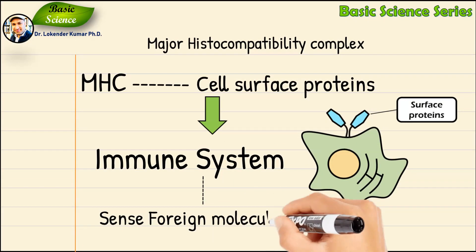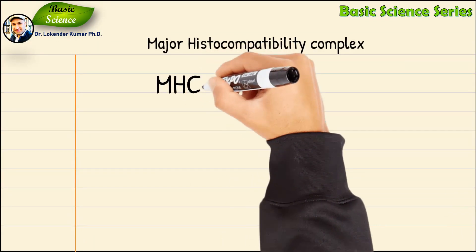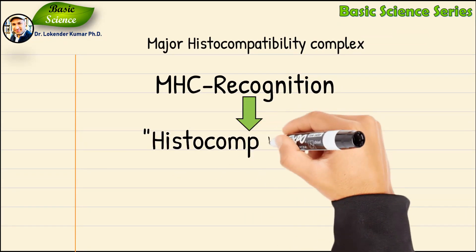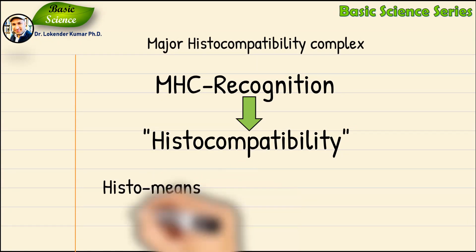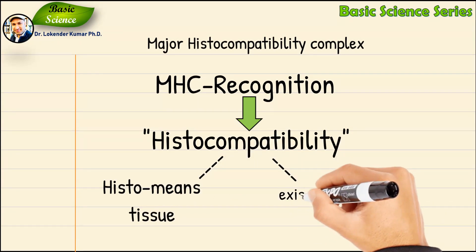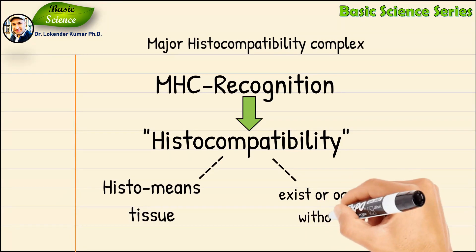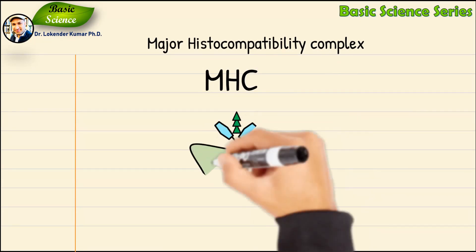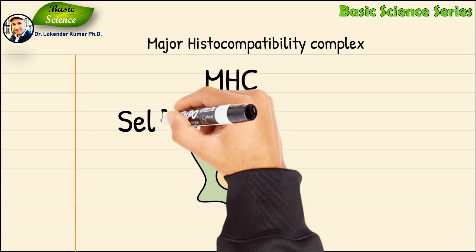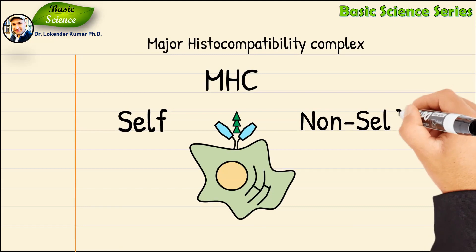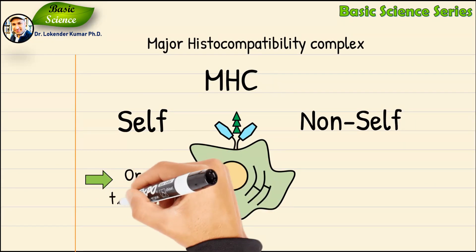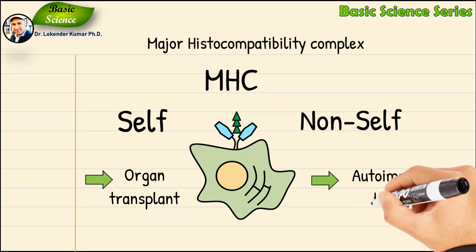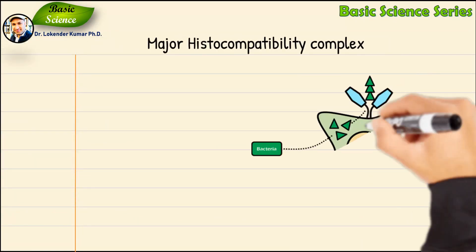MHC encodes cell surface proteins essential for the immune system to recognize foreign molecules. This recognition determines the compatibility of cells towards each other, and is also known as histocompatibility. 'Histo' means tissue, and 'compatibility' means when two things are able to exist or occur together without problem or conflict. In simple words, these proteins help cells recognize the difference between self and non-self. Therefore, MHC determines the compatibility of a donor for organ transplant as well as susceptibility to autoimmune diseases.